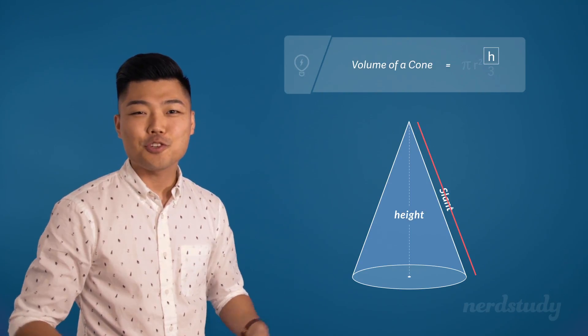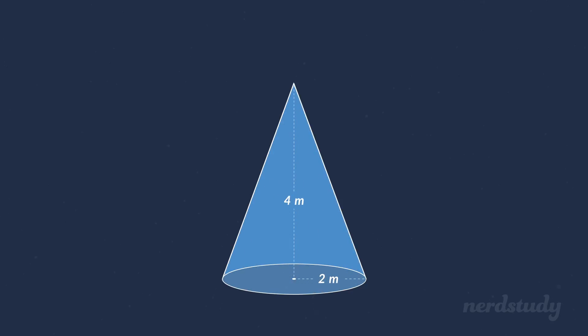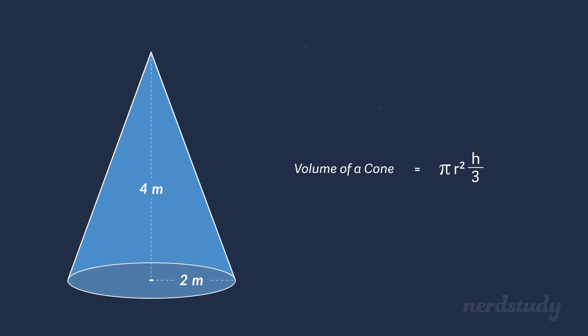So without further ado, let's try a question together. The volume of this cone is fairly easy to get. We just need to remember the formula: pi r squared times h over 3. Now our diagram provides us with both the radius and the height of the cone, so all we have to do is plug them into our equation.